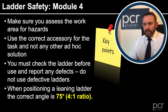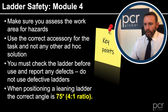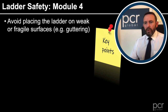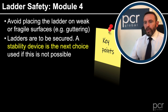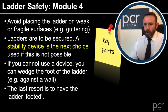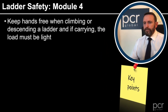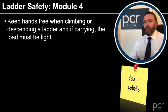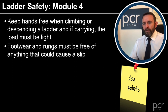When positioning a leaning ladder against the wall, the correct angle is 75 degrees, giving a 4 to 1 ratio — four up and one out. Avoid placing ladders on weak or fragile surfaces such as guttering — use standoffs. Ladders must be secured; a stability device is the next choice if securing is not possible. If you cannot use a device, wedge the foot of the ladder against a wall. The last resort is to have somebody foot the ladder. When climbing ladders, keep hands free. If carrying, the load must be light. Footwear and rungs must be free of anything that could cause a slip.